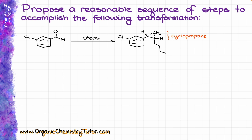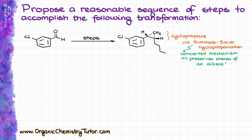The first thing I am seeing here is that my final product is a cyclopropane. So how do we make cyclopropanes? Probably the first method that comes to mind, and the most common method, is going to be the Simmons-Smith cyclopropanation. An important thing to remember about that reaction is that the Simmons-Smith reaction is a concerted reaction — it has a concerted mechanism — which means that it is going to preserve the stereochemistry of the original alkene.